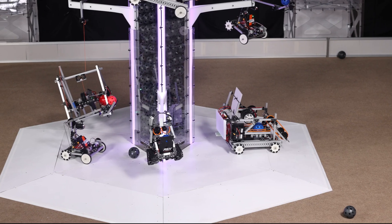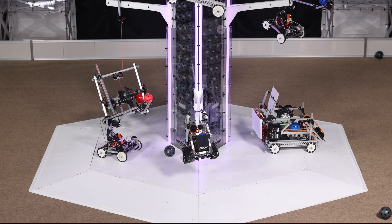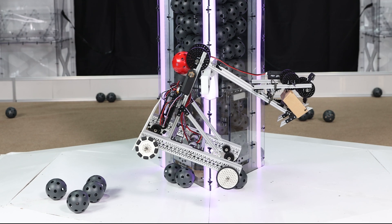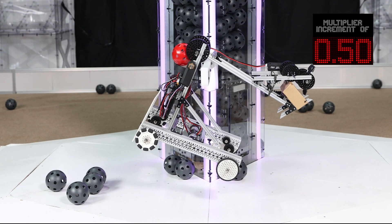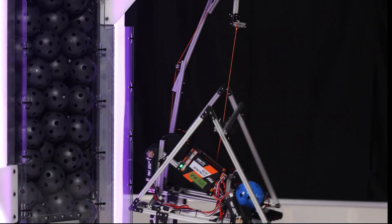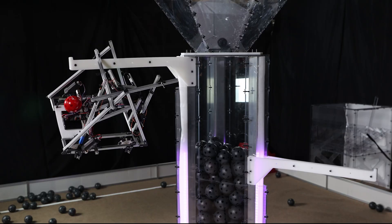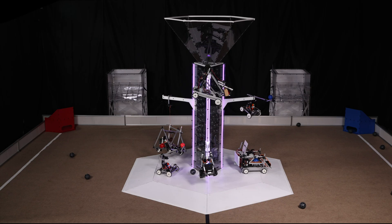Each robot fully supported by the platform, storage level 1, earns a multiplier increment of 0.25. The low bar, storage level 2, a multiplier increment of 0.5. Either of the two middle bars, storage level 3, a multiplier increment of 0.75. And the high bar, storage level 4, a multiplier increment of 1. Resulting points will be rounded up to the nearest whole number.